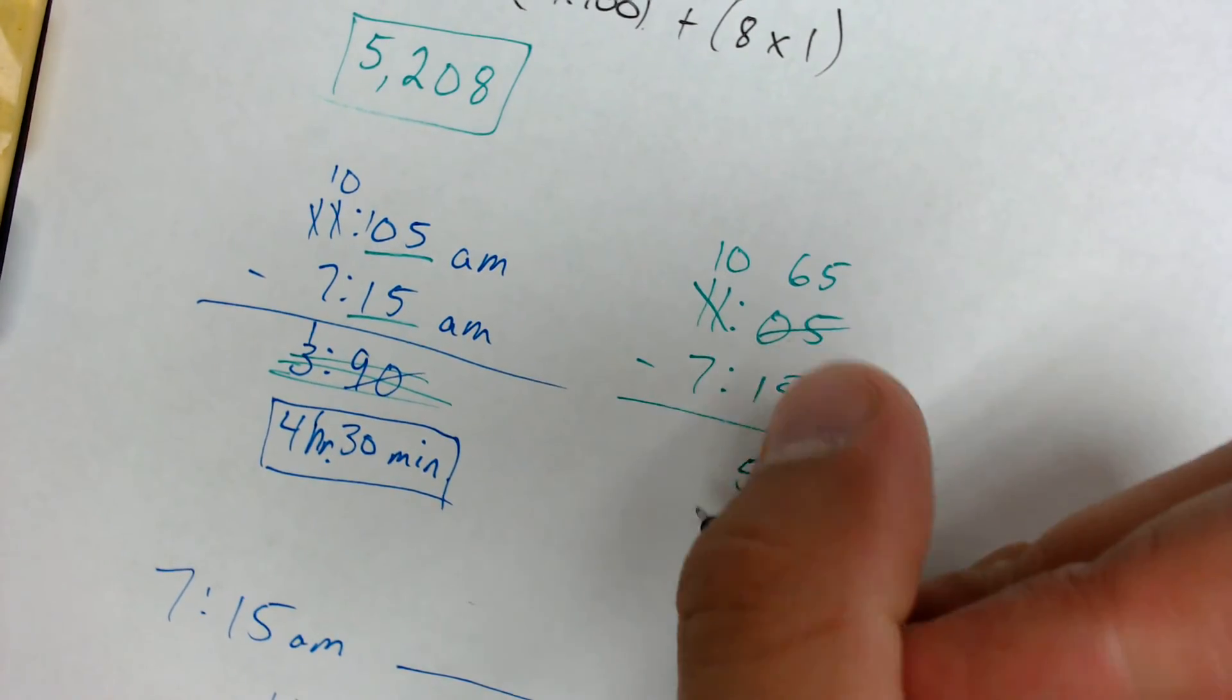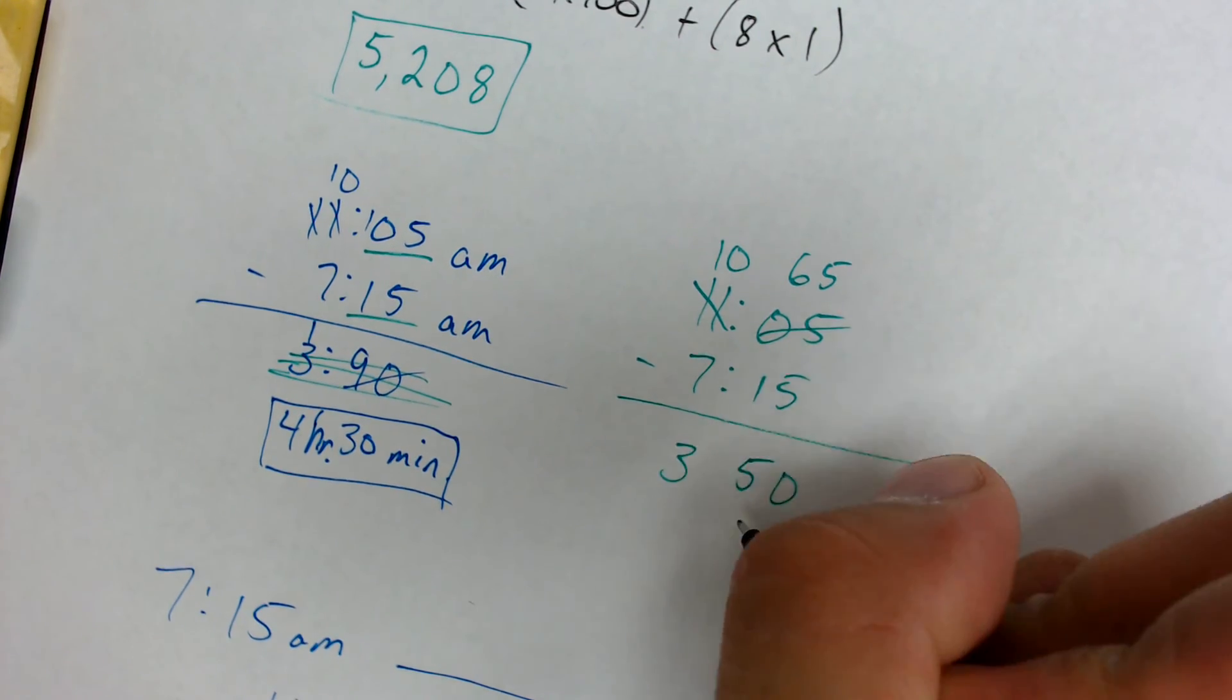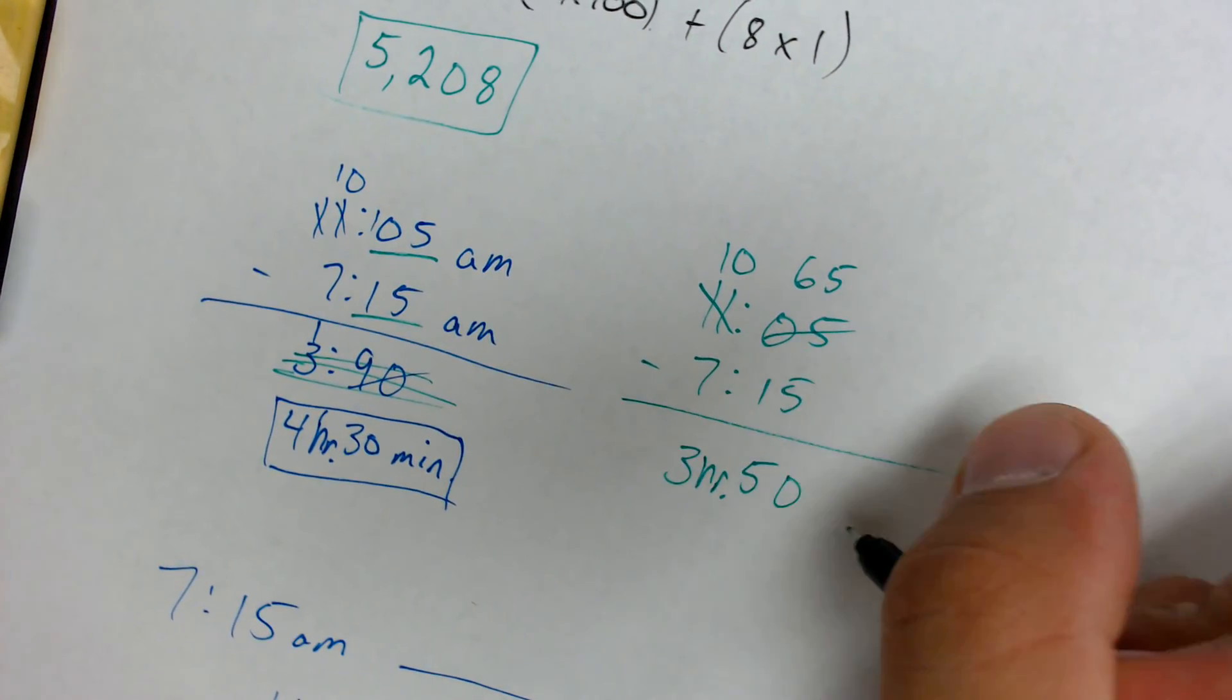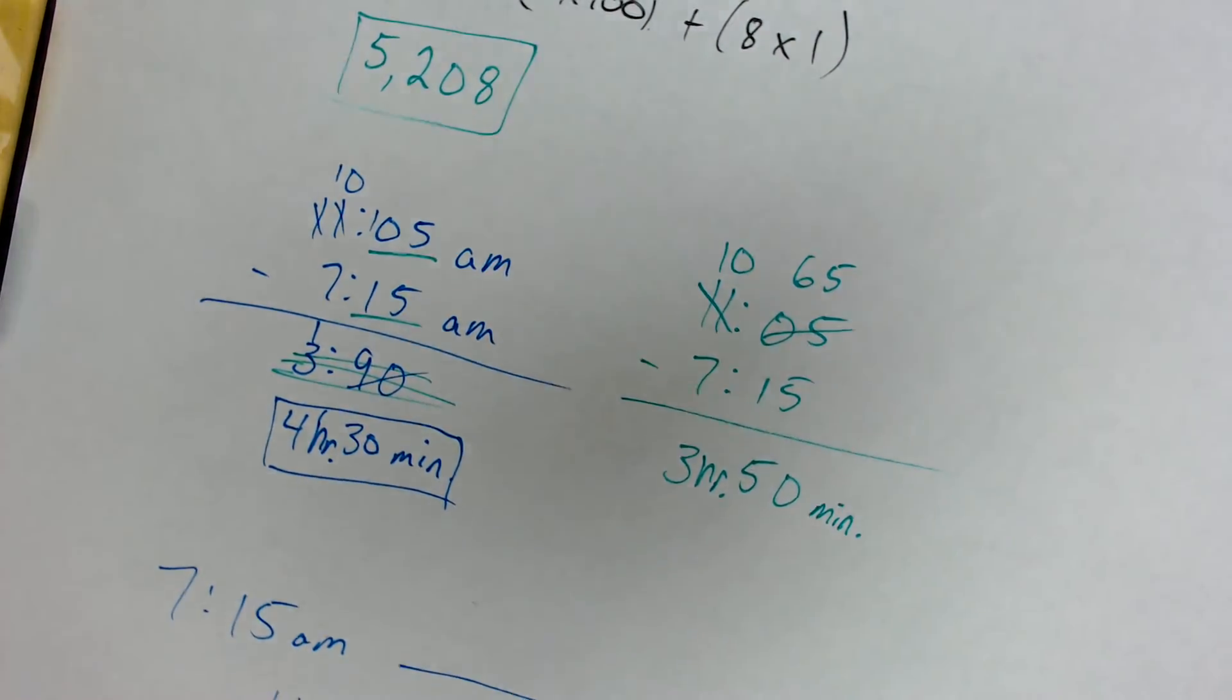So much like fractions where you have to look at the entire denominator, you have to look at the entire minute count here. So that one hour now turns into 60 minutes. So now I have 60 minutes plus five minutes, which makes this become 65 minutes. Now I can go ahead and subtract. So 65 minus 15 gives me 50 minutes. From there, then I can do 10 minus seven, which is three. And then I have three hours and 50 minutes.